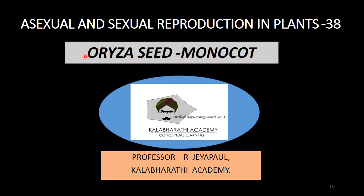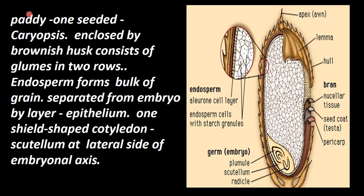Monocot seed is the example of Oryza. Oryza means rice, as you will see — paddy. It is one-seeded and enclosed by a brownish husk.